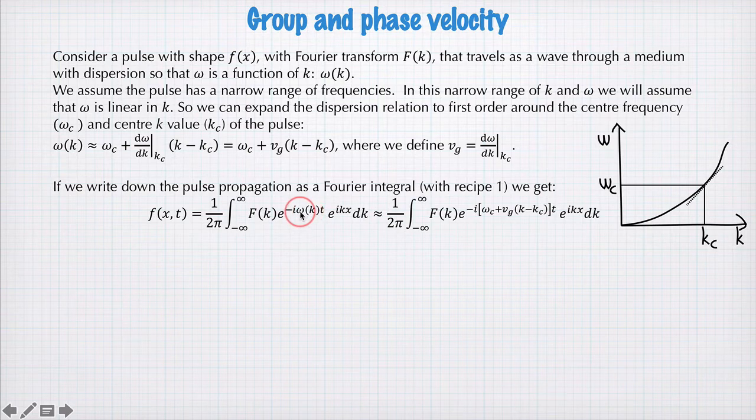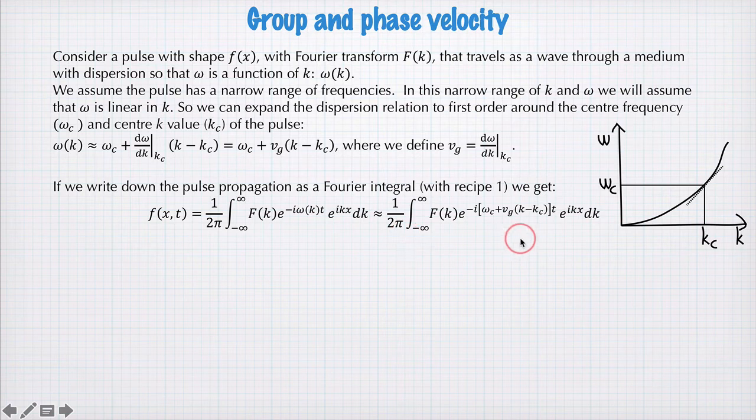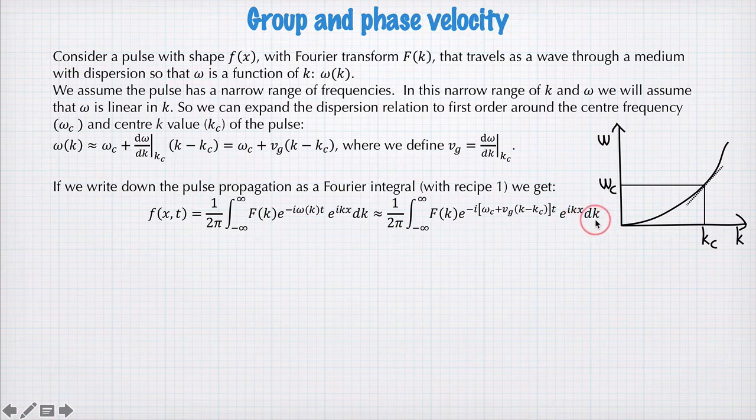So we take this dispersion relation here, we expand to first order, and we get this approximation here. Now we're going to take out all the terms out the front of the integral that do not depend on the variable of integration k to give us this expression here.